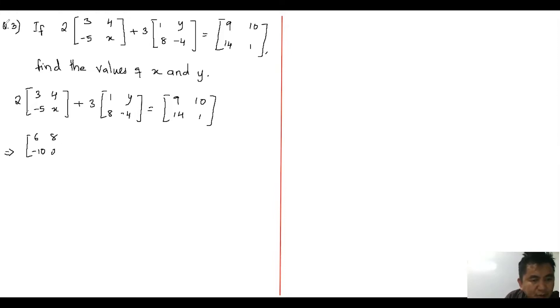Similarly, we have three, three, three y. Twenty-four minus twelve is equivalent to here it is nine, ten, fourteen, one. Then can we add these two matrices?